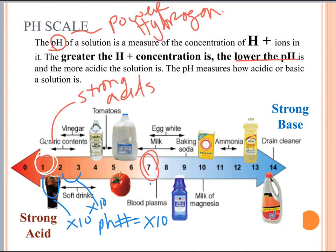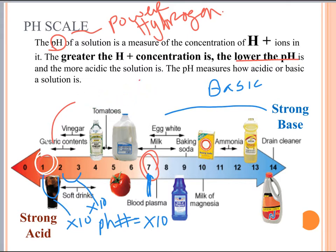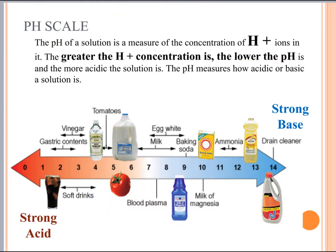So then we get to the middle here — neutral pH. Everything above here is going to be basic, and this side is acidic. So seven is the dividing line. I'll get rid of all this stuff in a second so you can copy this down. Perhaps you can get this stuff down better than I can.